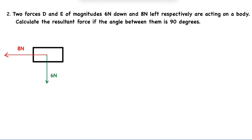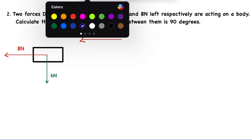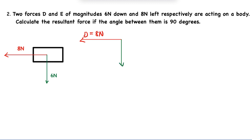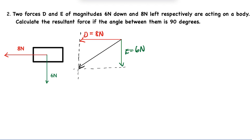Before calculating, let's draw the vector diagram. Using the tail-to-tail method, we draw 8 Newtons to the left (force D) and 6 Newtons downwards (force E). We close it with broken lines to complete the parallelogram. The resultant goes from one vertex to the opposite vertex, and the angle showing the direction of the resultant is at that vertex.